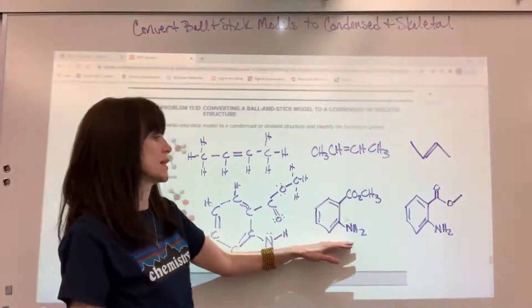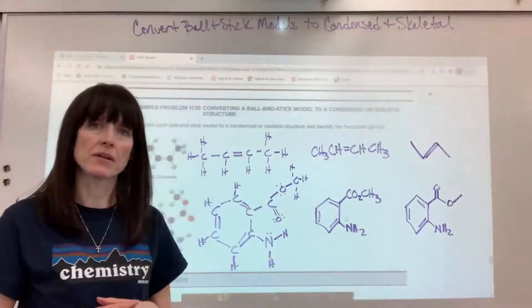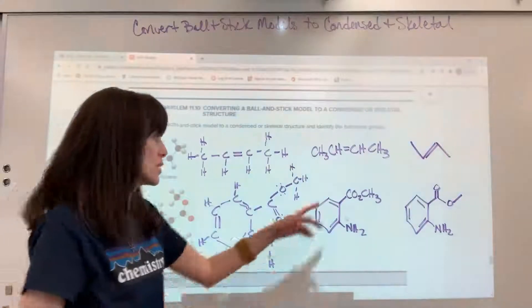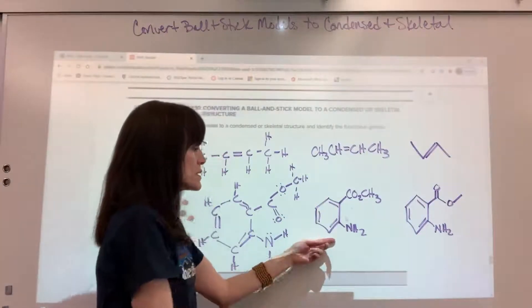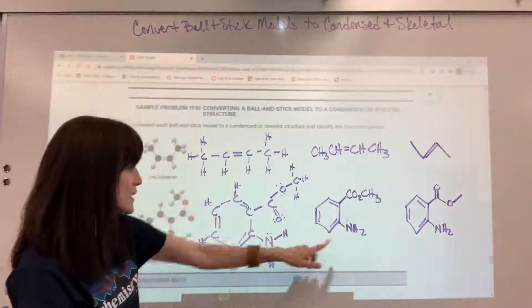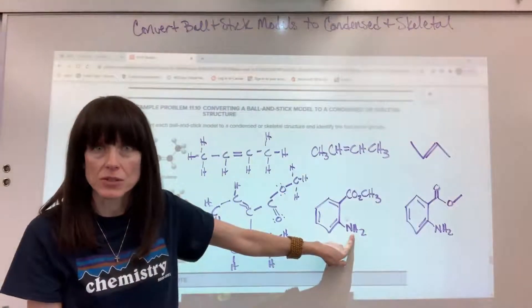Writing this in our condensed, so the cyclical rings and the aromatic rings, we still just write those with lines. Okay, so here's my aromatic group, that benzene, and then I have my nitrogen, we put the hydrogens.